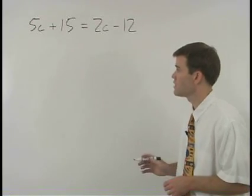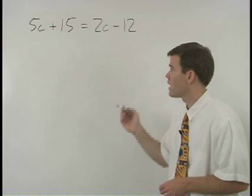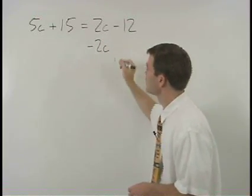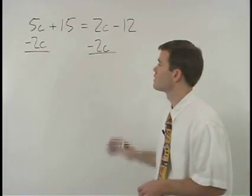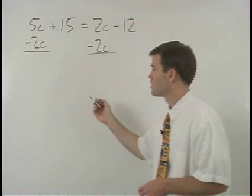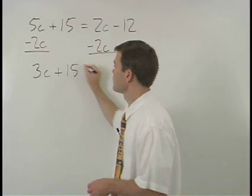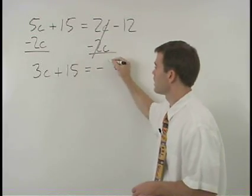So let's put our c's together on the left side of the equation and we do that by subtracting 2c from both sides. On the left we have 3c plus 15 and on the right we have negative 12.